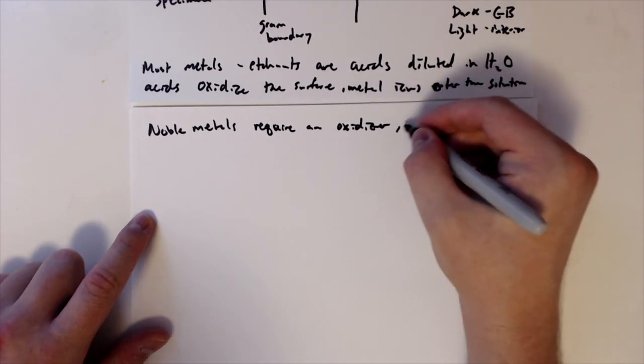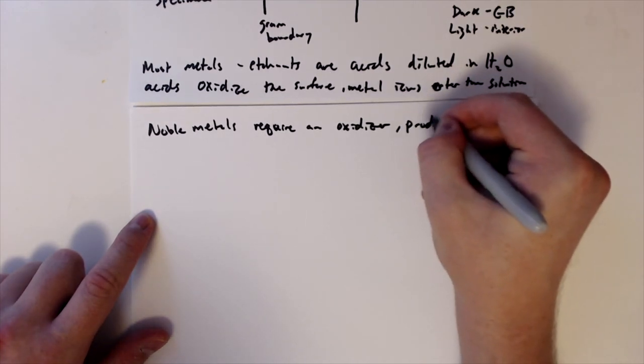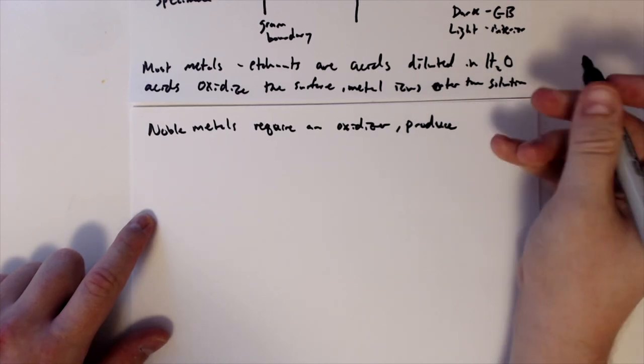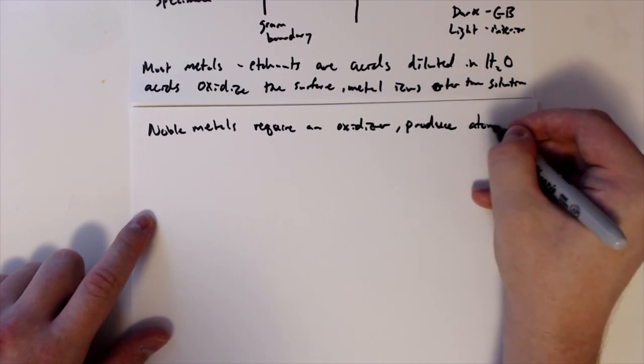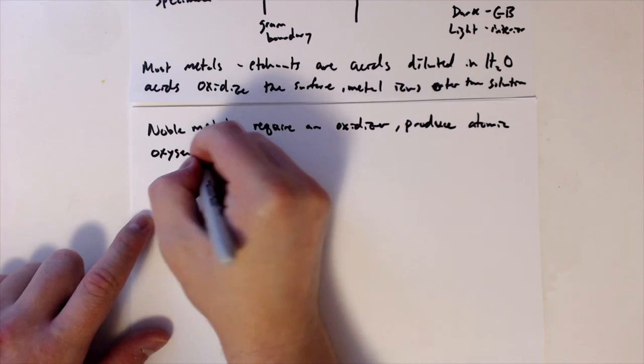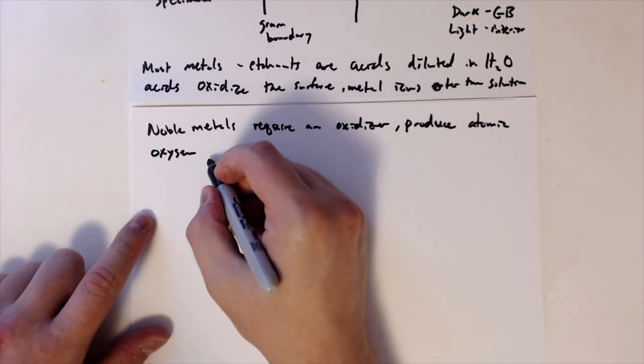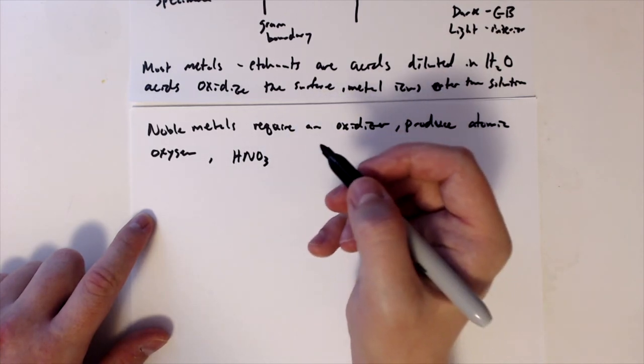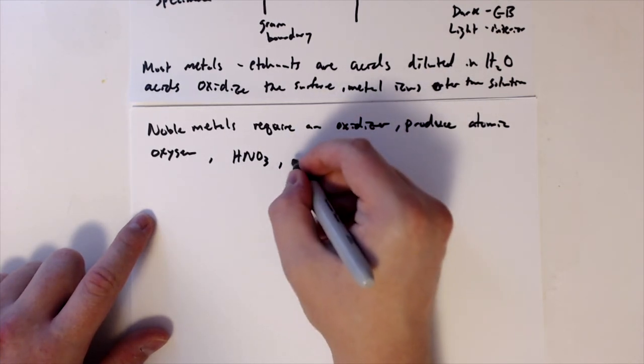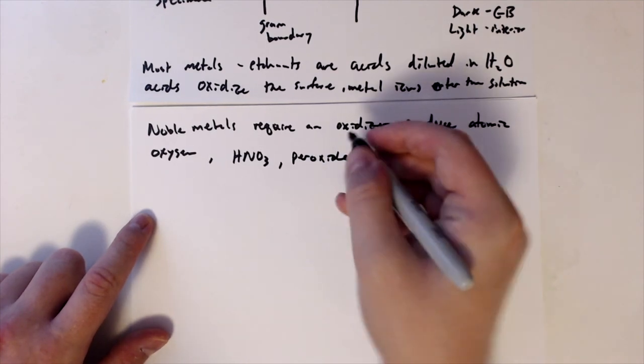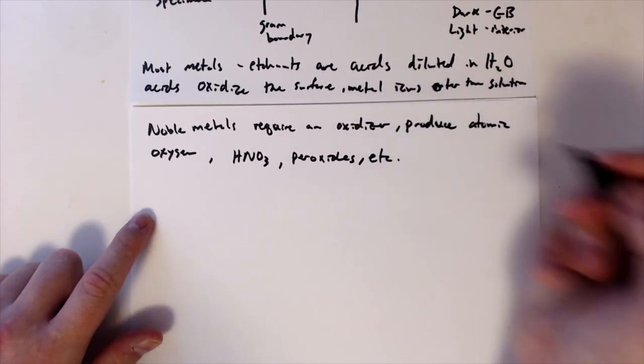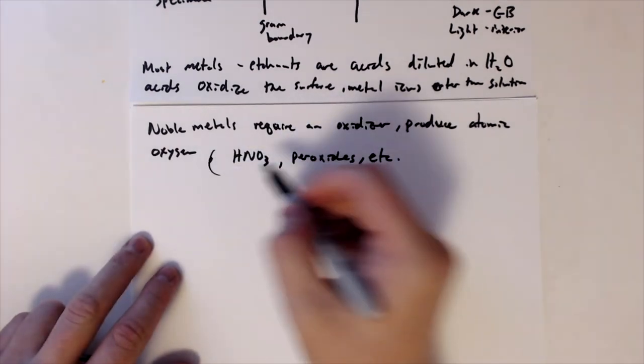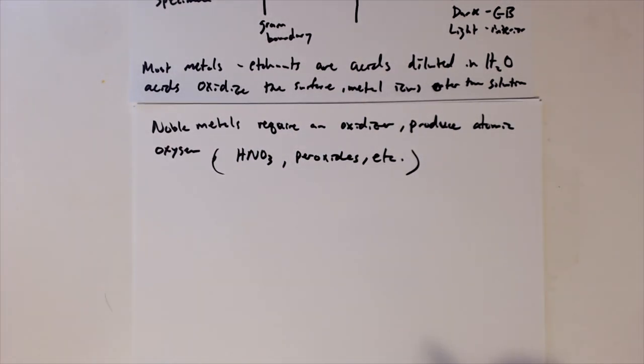However, if we're talking about noble metals, those also tend to require an addition oxygen and oxidizer. This will produce atomic oxygen. So this could be something like HNO3, nitric acid. It could be peroxides, et cetera. So there's a number of these oxidizers that we have.